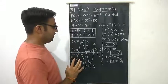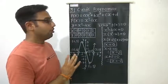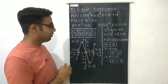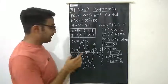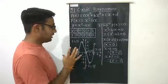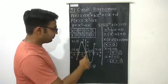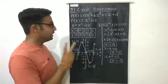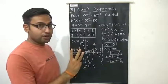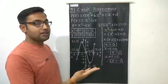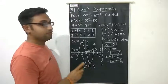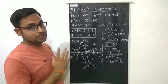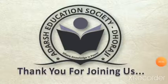This is all about the graphical or geometrical meaning of the zeros of a polynomial. You can now determine how many zeros a polynomial has simply by looking at its graph. If the graph touches the x-axis at one point, it has 1 zero; at two points, 2 zeros; at three points, 3 zeros; at four points, 4 zeros. And if the graph does not touch the x-axis at all, it has no zeros. Thank you for joining us.